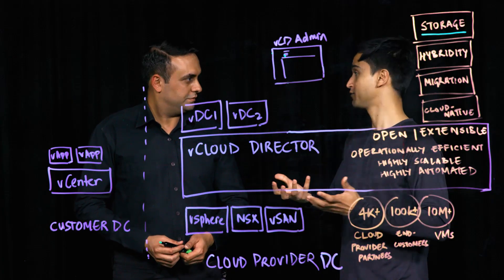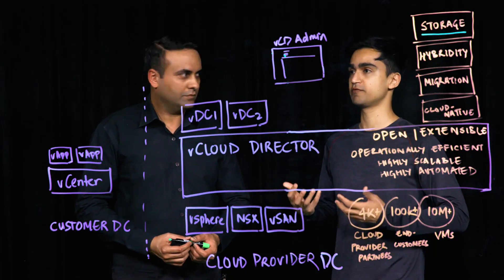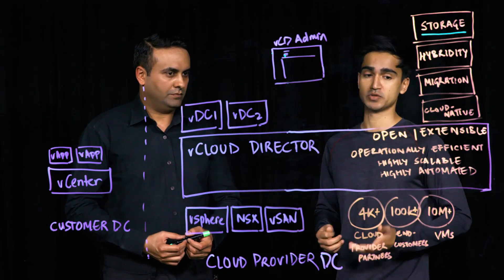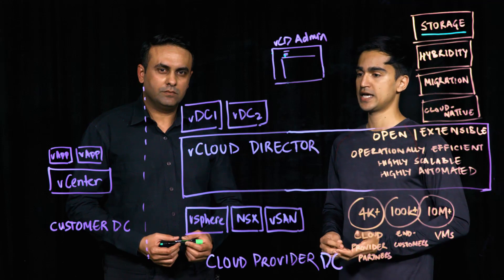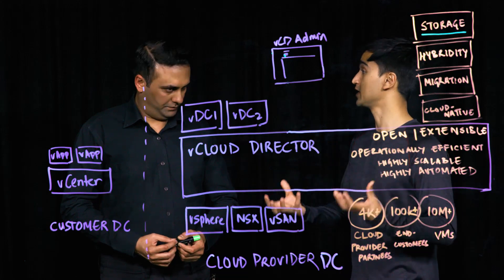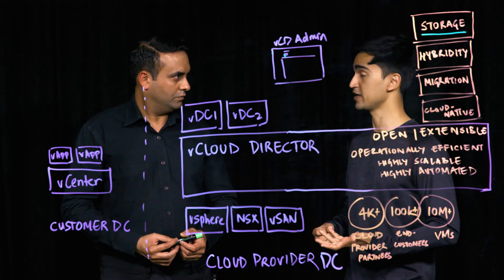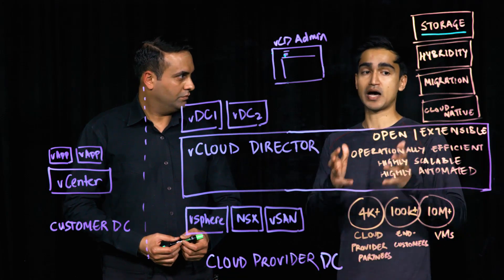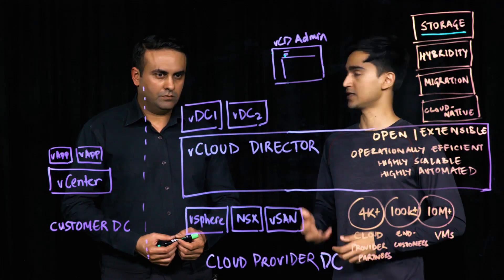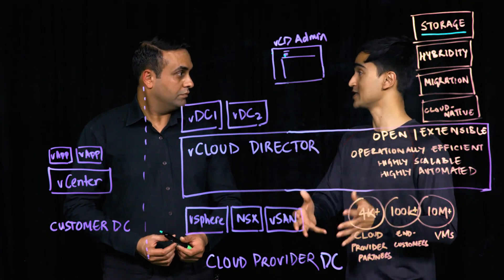The solution is focused primarily for VMware cloud providers, one of the crown jewels of VMware's ecosystem. We take pride in the fact that we have 4,000 cloud providers powering over 100,000 end customers, over 10 million VMs under management. The majority of these workloads and customers are under the management framework of vCloud Director — an open, extensible, highly scalable, extremely operationally efficient and automated platform. It really powers the suite of cloud services that cloud providers provide to their end customers today: cloud native apps, data center migration, hybridity, and the topic of today's discussion, storage and availability.